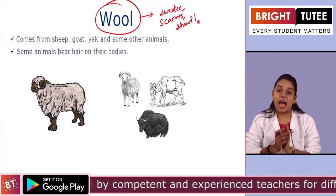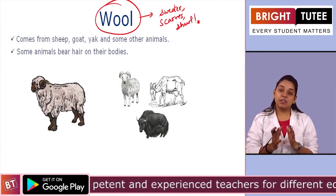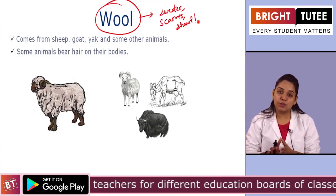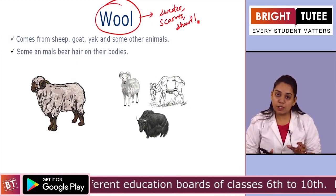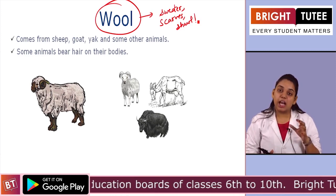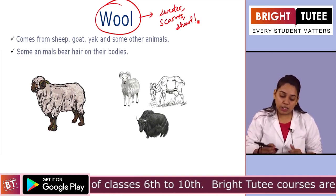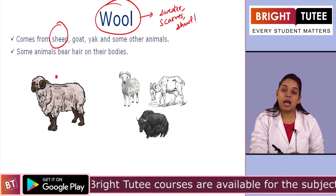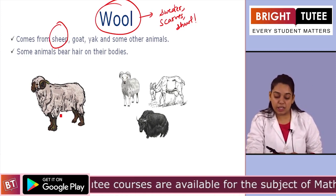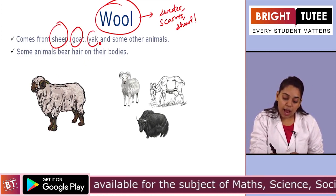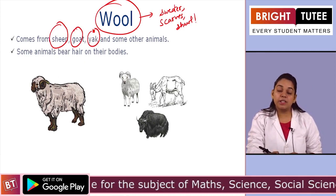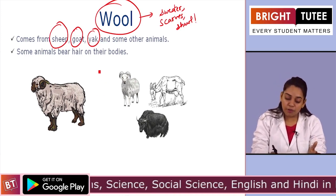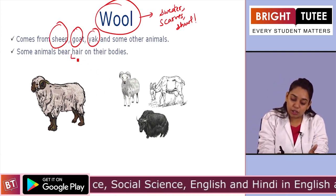So similarly, animals have this furry coating on their bodies that we use as fur. You must be thinking that the animal that yields wool is only sheep, but no — not only sheep. There are other animals like goat, yak, and even camels that yield wool in the form of hair on their bodies.